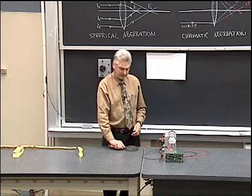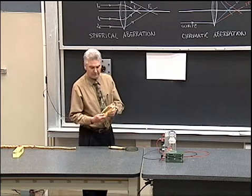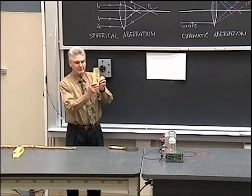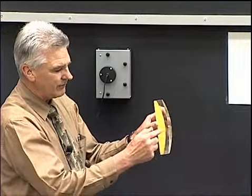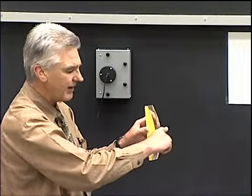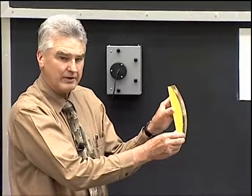An extreme example of a lens that has astigmatism would be a lens like this. Now, we never want to use a lens like this for our eye lens because the curvature this way is radically different than the curvature this way. In fact, it's flat across this way and curves significantly this way.